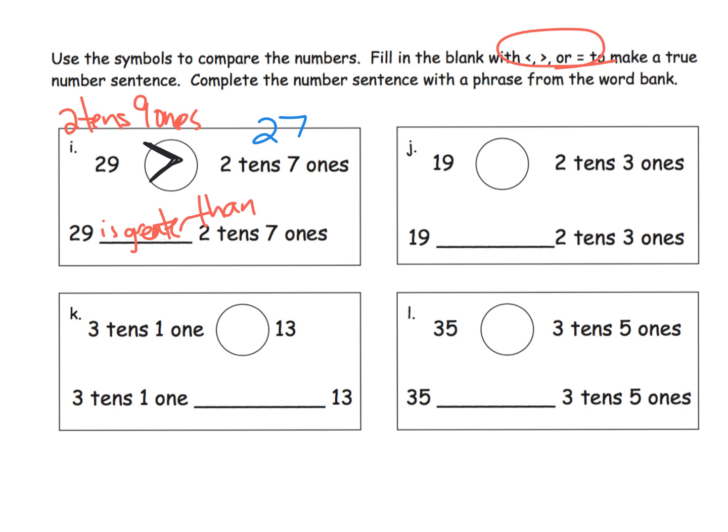Let's do one last example. This is letter L, so we've got something that's clearly 35 here, and what's three tens and five ones? Well, that's also 35, so we have an equal sign. 35 is equal to 35. So we're going to put is equal to, and that is horrible penmanship there, is equal to three tens and five ones.